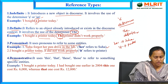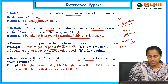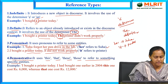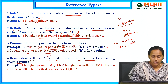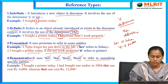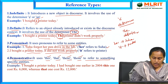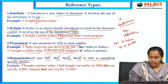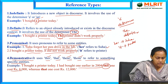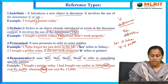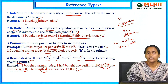Demonstrative reference uses 'this,' 'that,' 'these,' or 'those' to refer to specific entities. Example: 'I brought a printer today. I had bought one earlier in 2004. This one cost 6,000 whereas that one cost 12,000.' This illustrates the basic use of demonstrative reference to distinguish between specific entities.